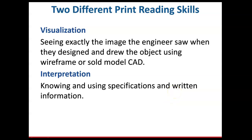There are two different types of print reading skills. First, visualization — basically how we can see and recognize what we're looking at and how that relates to our three-dimensional world. Then there's interpretation — understanding the notes, written information, and symbols, and how those symbols relate from one view to another. The bigger skill that needs to be developed at this stage is visualization. If you can't visualize what's going on in these prints, you certainly won't be able to make interpretations.